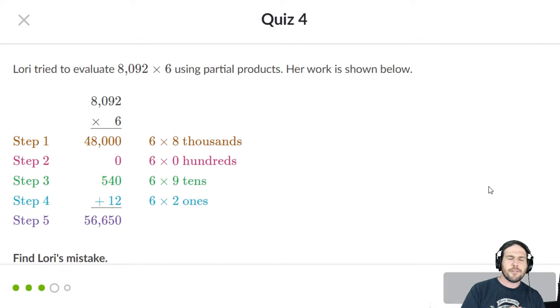Lori tried to evaluate 8,092 times 6 using partial products. Her work is shown below. Step 1, 6 times 8,000 is 48,000, that's good. 6 times 0 hundreds is 0. Not necessarily a vital step in my opinion, but it's not wrong.